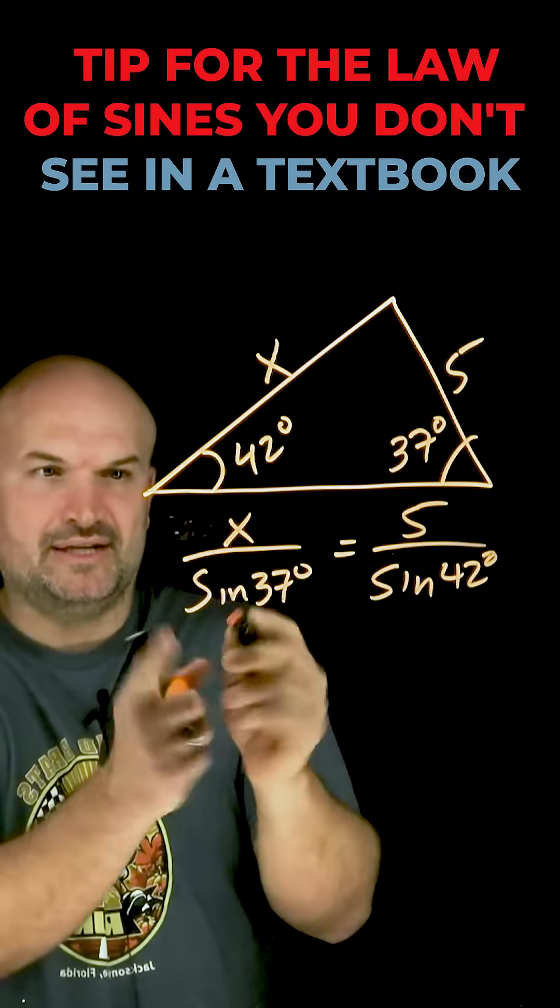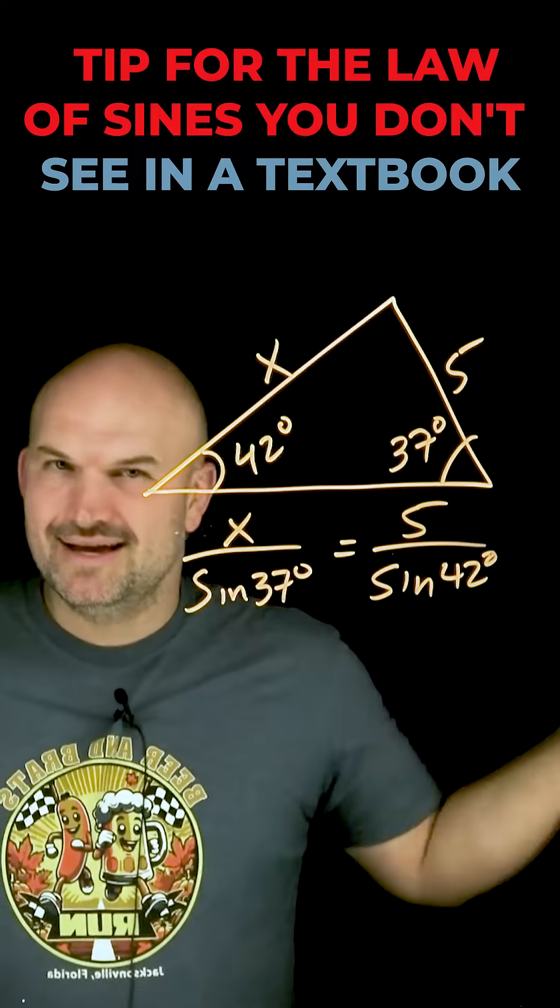Now all I simply need to do is multiply sine of 37 degrees on both sides and I can solve for x.